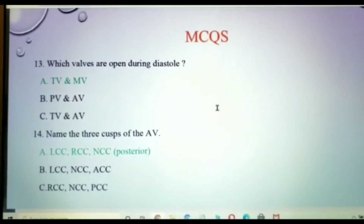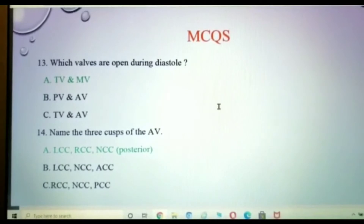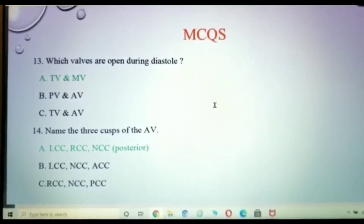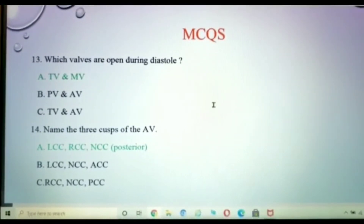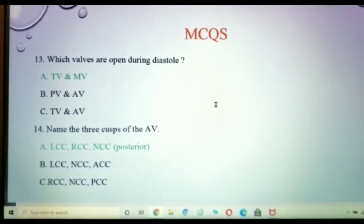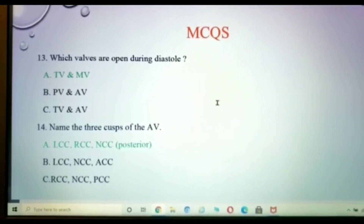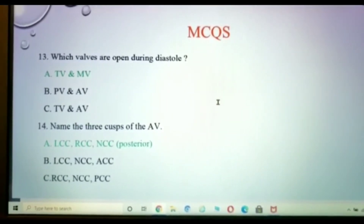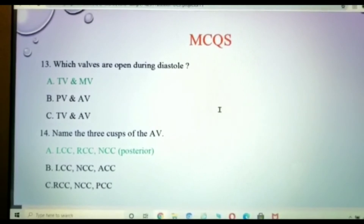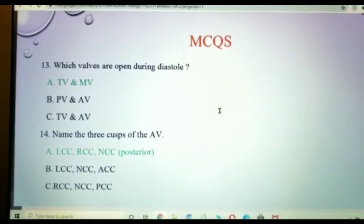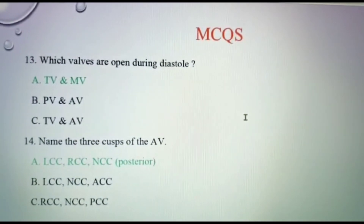Which valves are open during diastole? Those are the tricuspid and mitral valves. Next, name the three cusps of the aortic valve. The three cusps of the aortic valve are LCC, RCC, and NCC — LCC means left coronary cusp, RCC means right coronary cusp, and NCC is the non-coronary cusp, which is a posterior cusp.